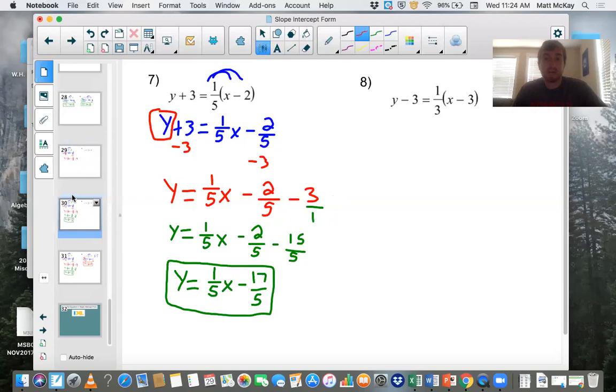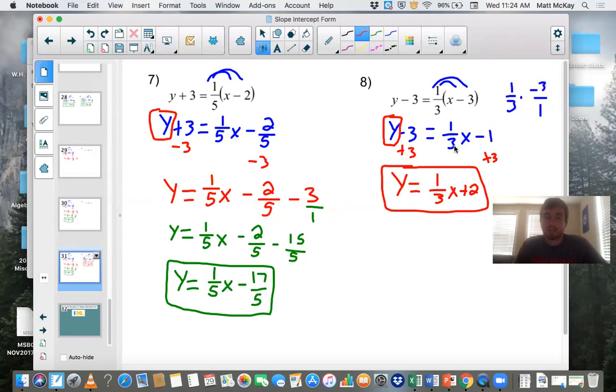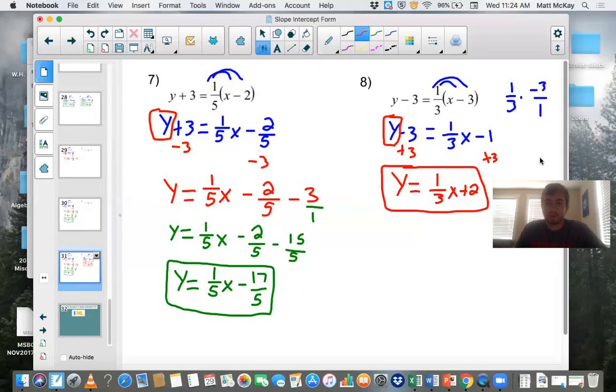Same thing for number eight. So you should pause the video now, try number eight and then refer back to seven and then check your work. Number eight, same thing. We want to distribute the one third to each of these. One third times x is one third x. One third times negative three. I wrote it over here to kind of show you. Here is one third multiplied by negative three over one. You can multiply straight across. You get negative three over positive three and that cancels out to give you negative one. So after you distribute right here, you get this line right here, which is in blue. You then box in the y. You add three to both sides. Y is by itself. It equals one third x negative one plus three is going to be positive two. Here is your final answer.